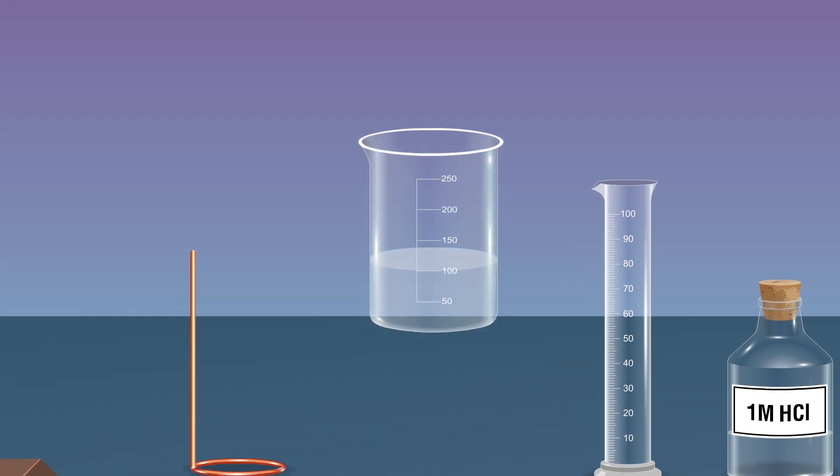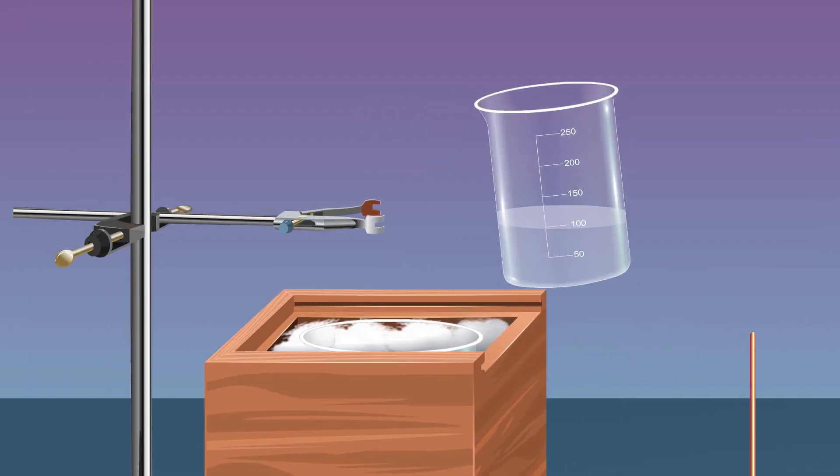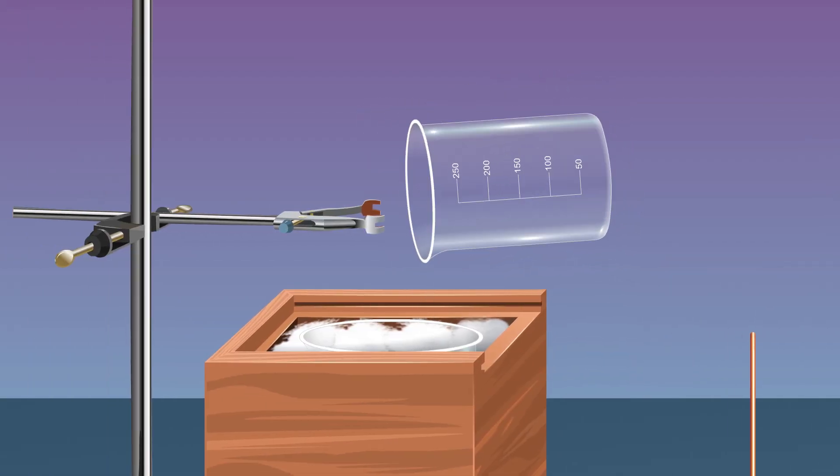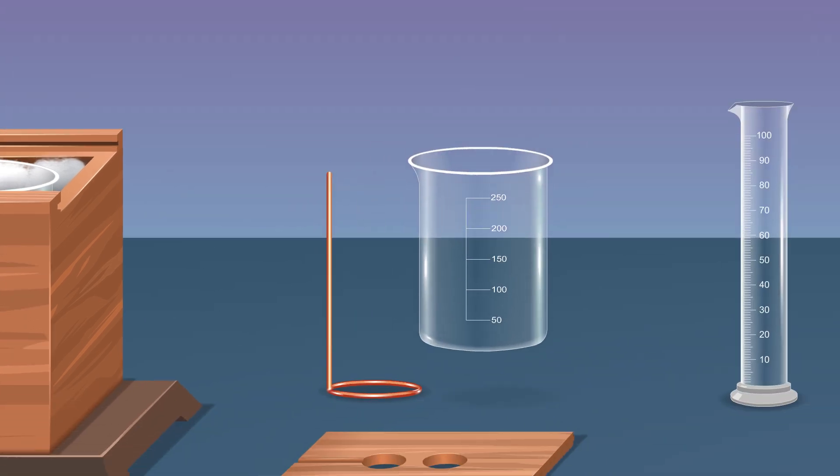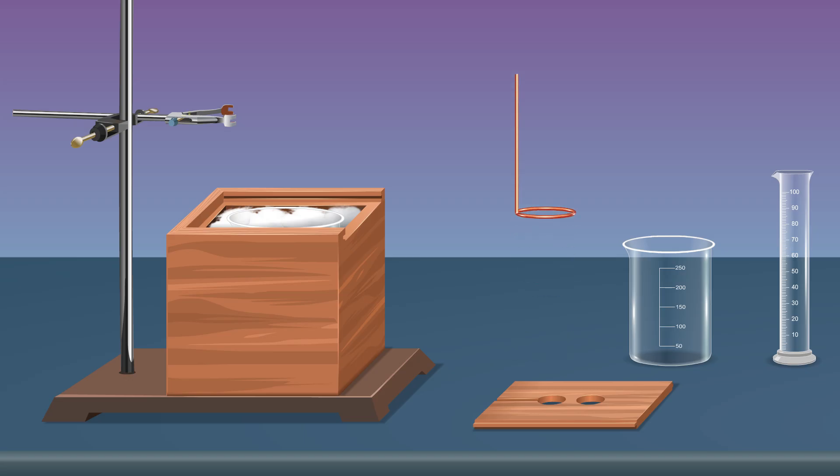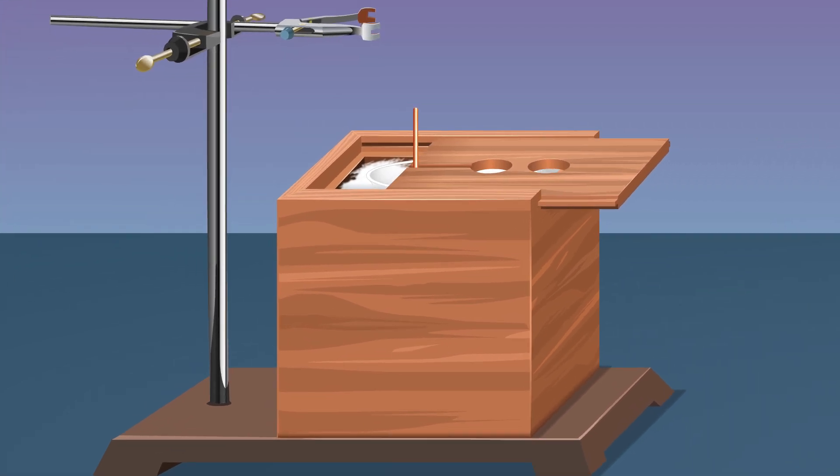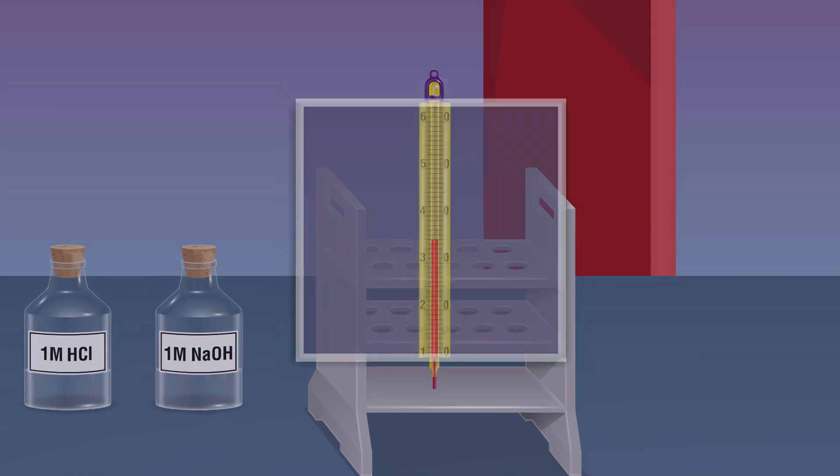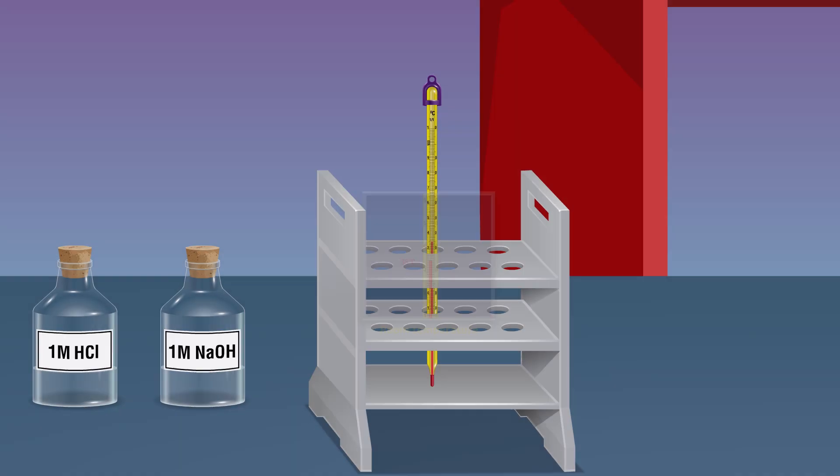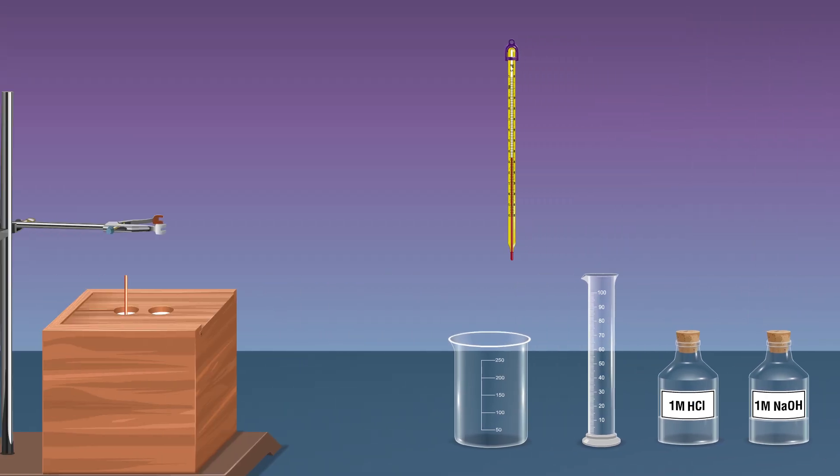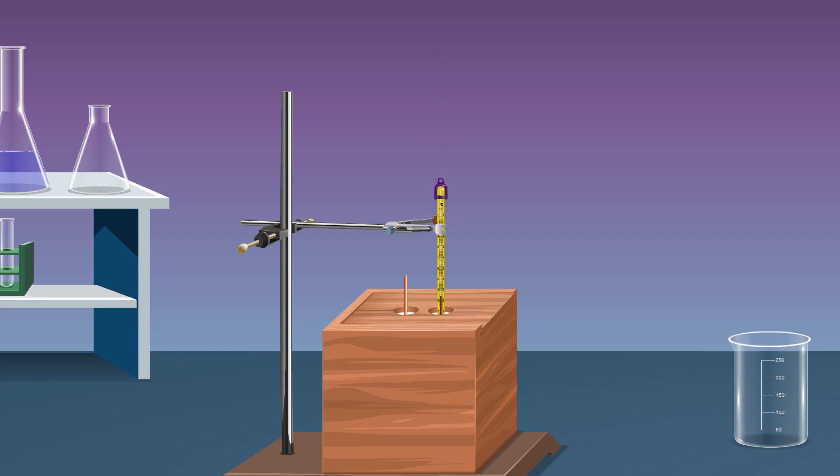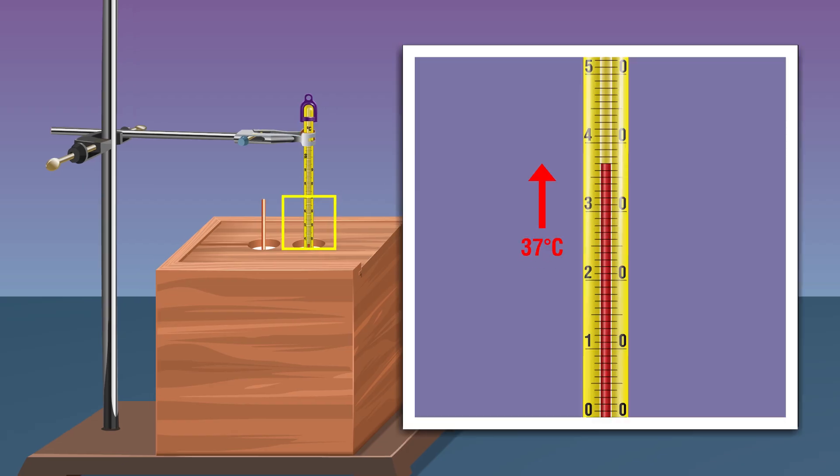Pour the sodium hydroxide solution into the calorimeter that contains 100 milliliters of HCl. Place the stirrer inside the calorimeter, close it, and stir the mixture well. Measure the maximum temperature of the reaction mixture and note it as the final temperature T2 degrees Celsius.